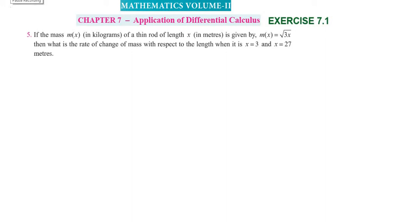Hi students, greetings from Success Education Academy. Mathematics Volume 2, Chapter 7, Exercise 7.1, Question 5. If the mass m(x) of a thin rod of length x in meters is given by m(x) = √(3x), then what is the rate of change of mass with respect to the length when x = 3 and x = 27?